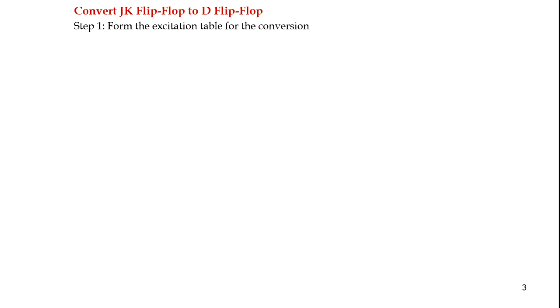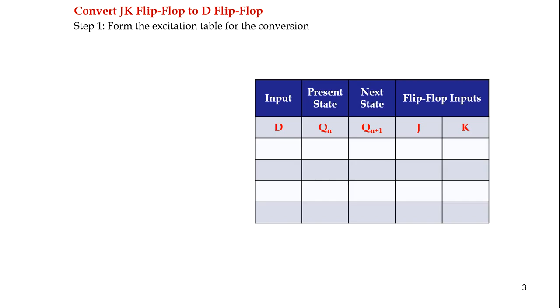As an example, we are solving the conversion of a JK flip-flop to a D flip-flop. The first step is to form the excitation table for the conversion. The input is the D flip-flop, which is the destination flip-flop. We then fill the present state and next state, and the flip-flop inputs will be the JK flip-flop.